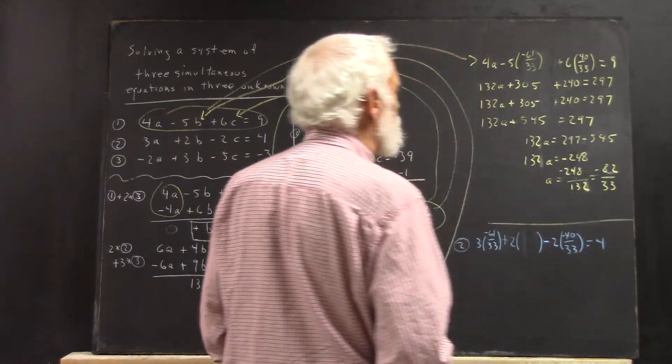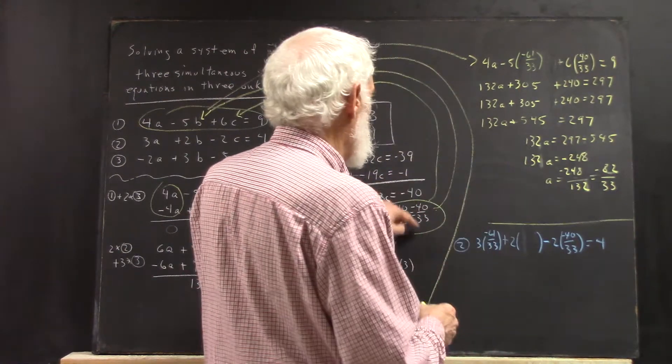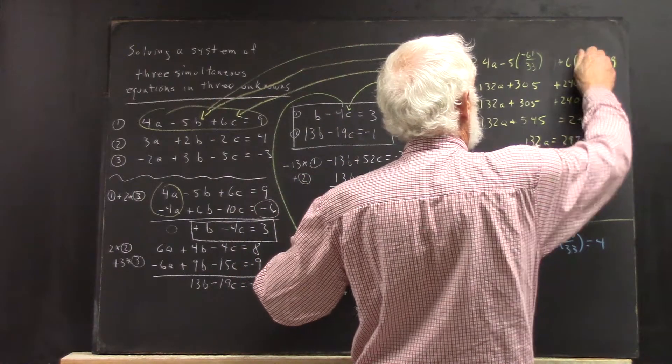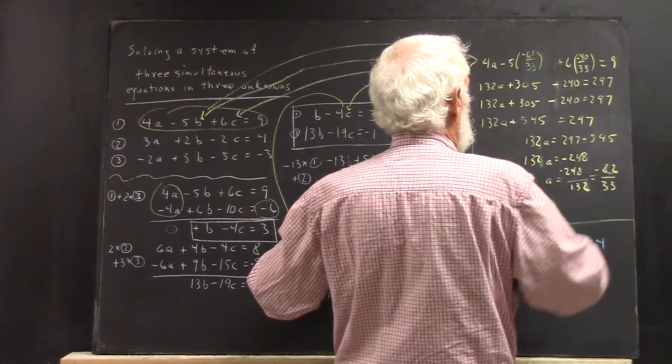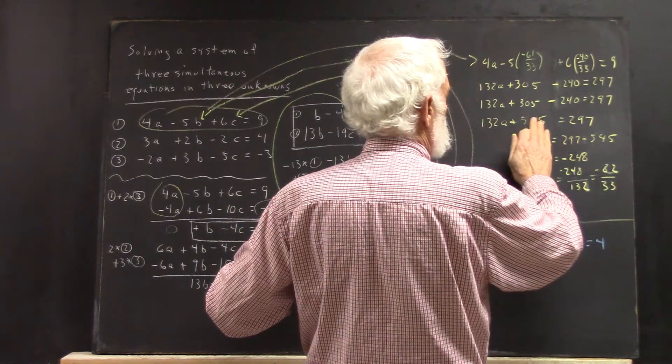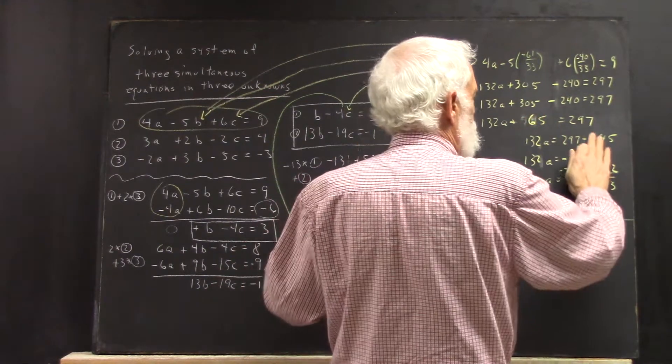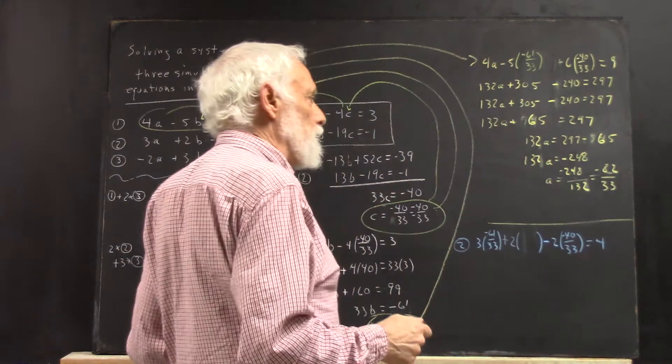And then my value of a. If I correct my negative 40 over 33, which I did here, if I correct it up here, it makes this 240 negative and this 240 negative. And it gives me 65 here. So now I've got 65, which I have to subtract over here. And that's going to change my numbers.